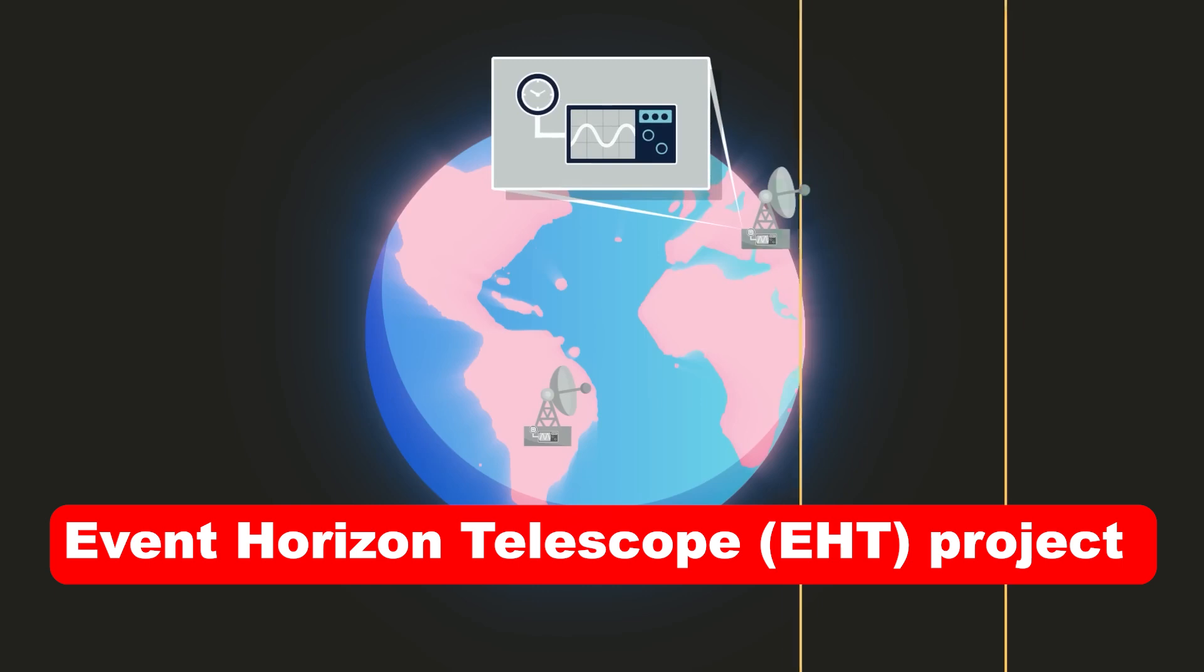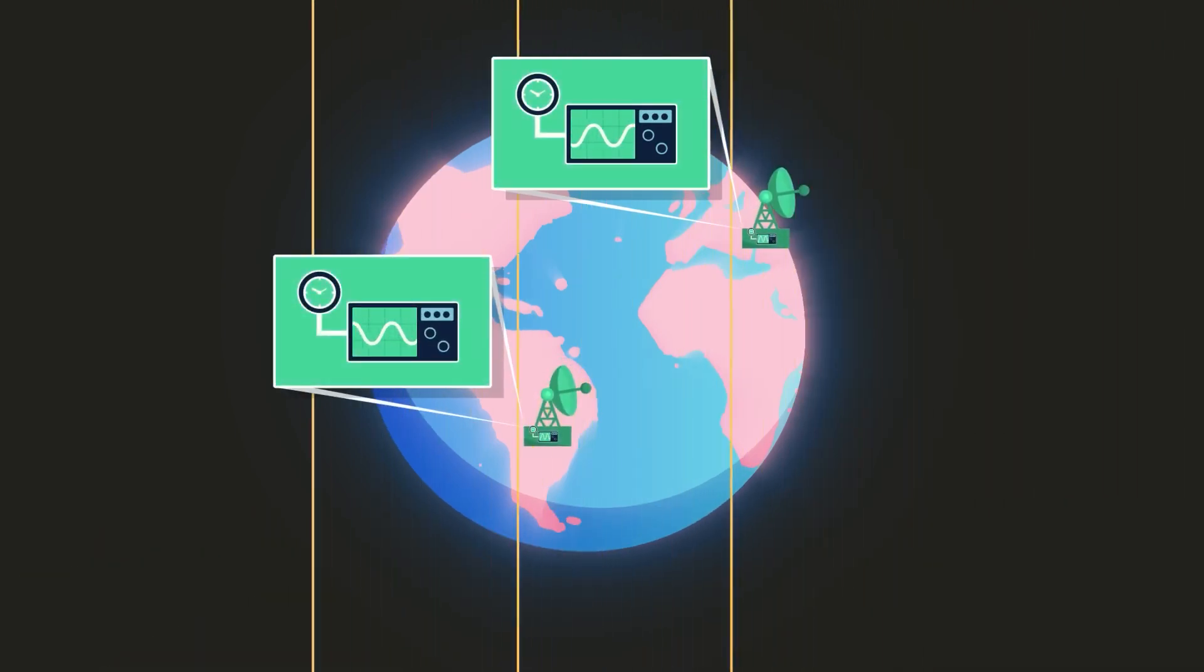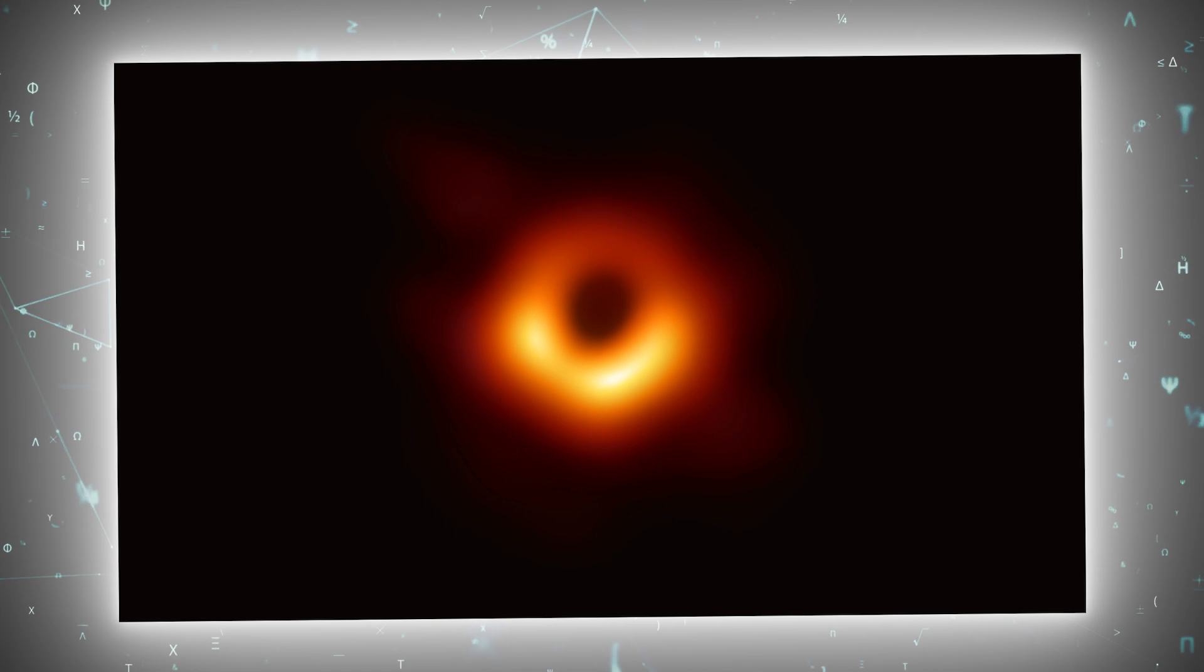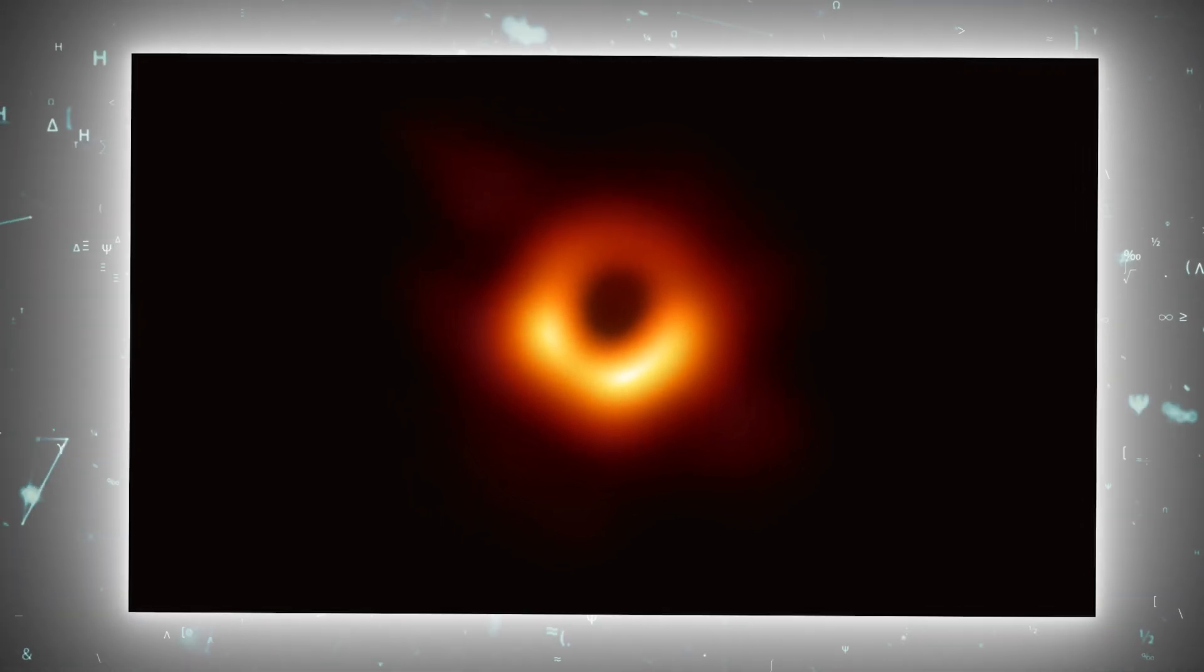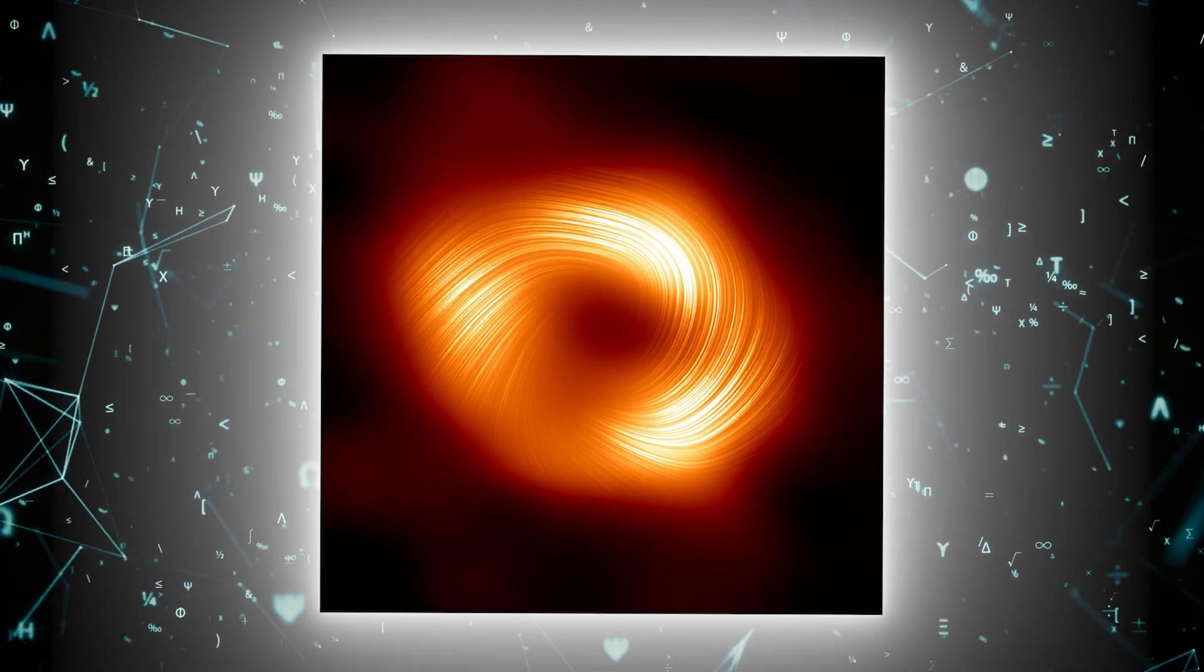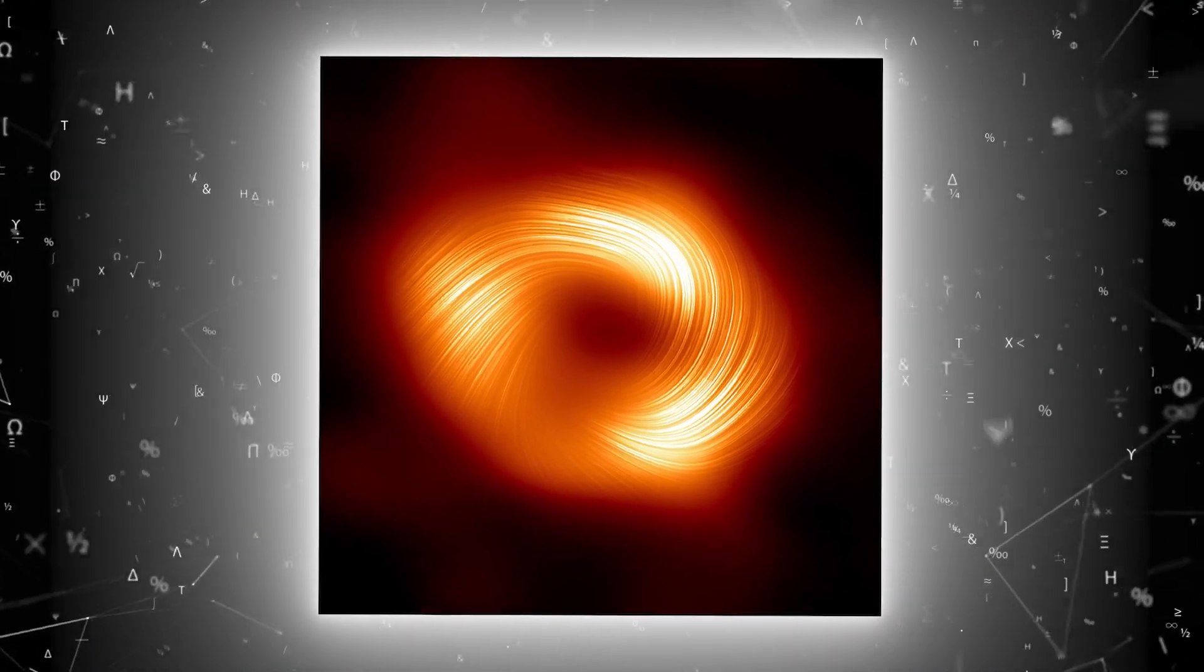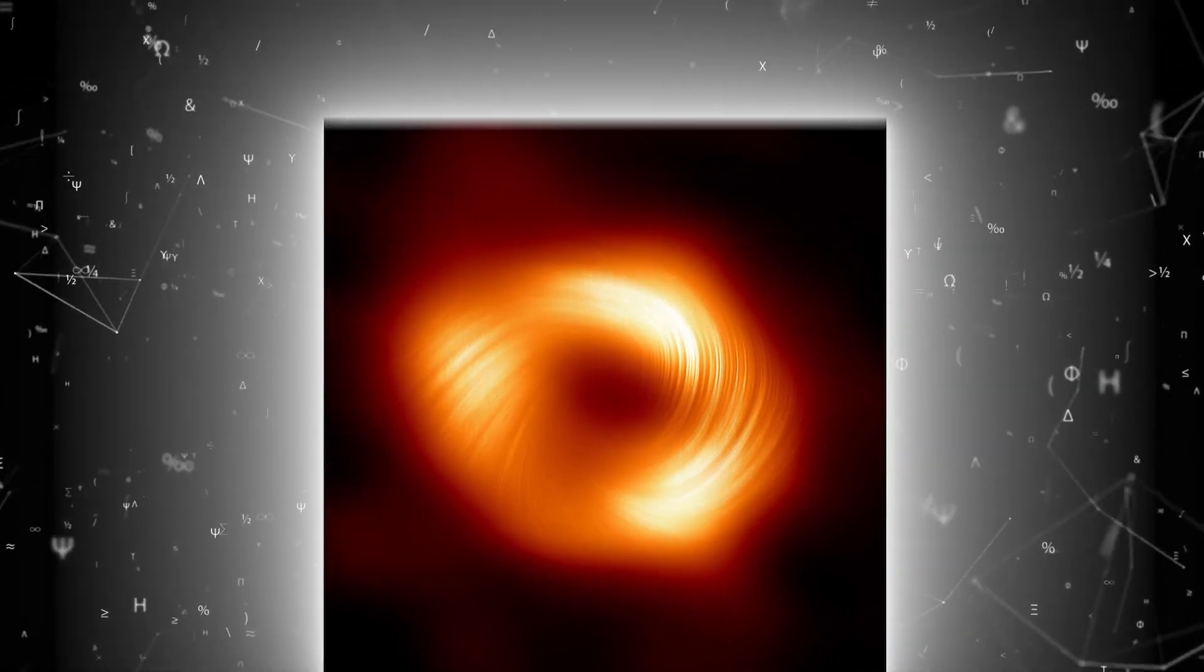The Event Horizon Telescope project achieved a groundbreaking milestone in 2019 by capturing the first image of a black hole's shadow in the galaxy M87. This shadow is cast by the event horizon against the background glow of infalling material, providing crucial evidence for the existence and properties of black holes.